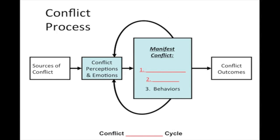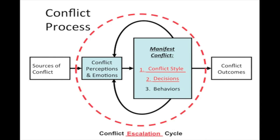Now we'll blow up the two middle boxes of the model. Recalling that only one party needs to perceive conflict for it to exist — when it becomes obvious to both parties, it becomes manifest or actual conflict. When this happens, it can escalate out of control in a seemingly perpetual feedback loop where we make bad decisions and engage in inappropriate behaviors, which escalate or twist our perceptions and make our emotions even more pronounced, causing us to adopt a more maladaptive conflict style. This feedback loop is what we call the conflict escalation cycle.